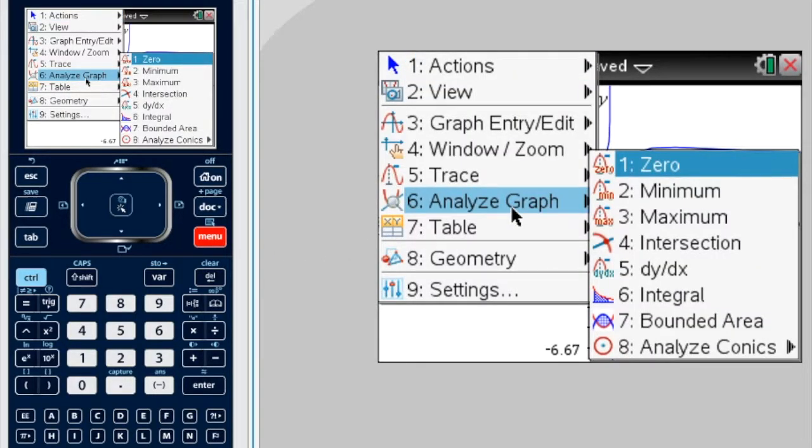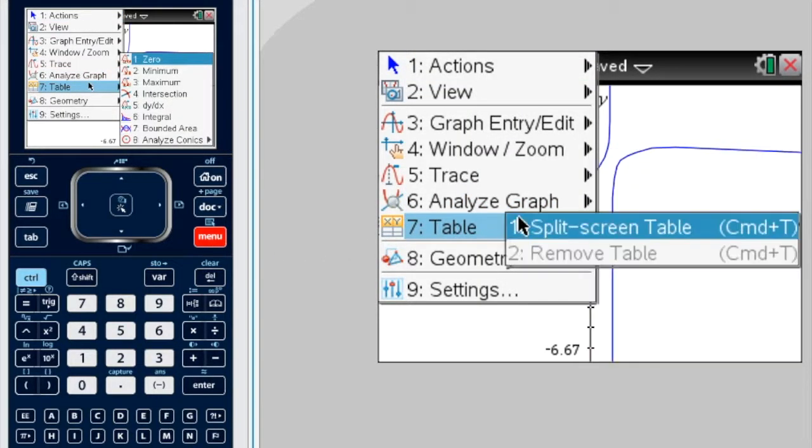Now, to find the asymptotes of the function, we can go find a table of values. So press menu, table, and split screen table.